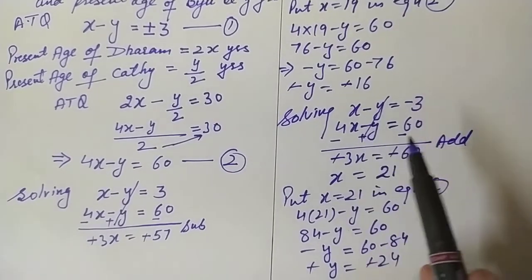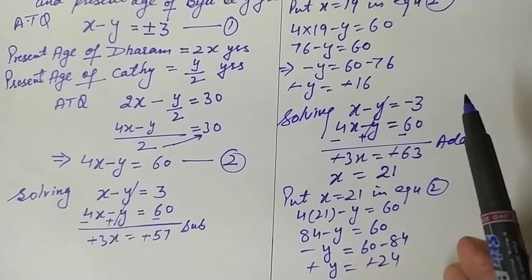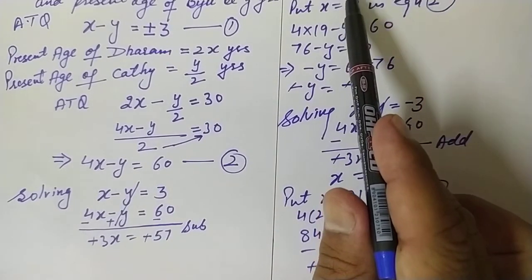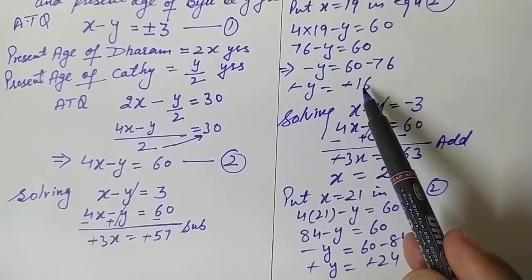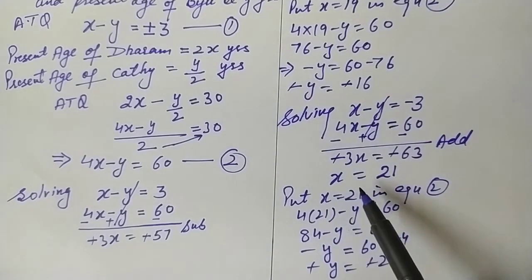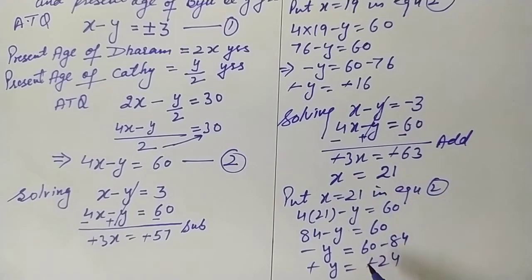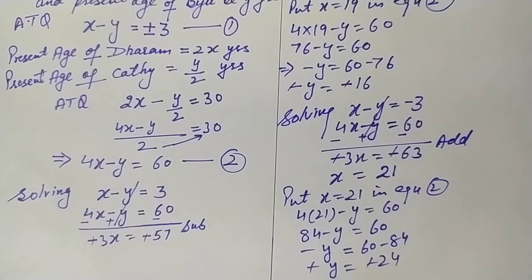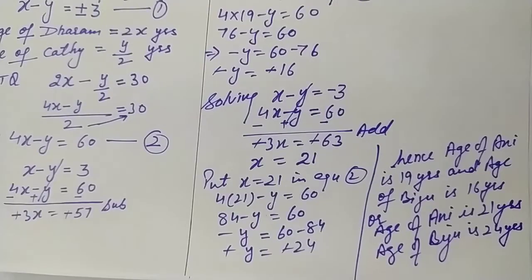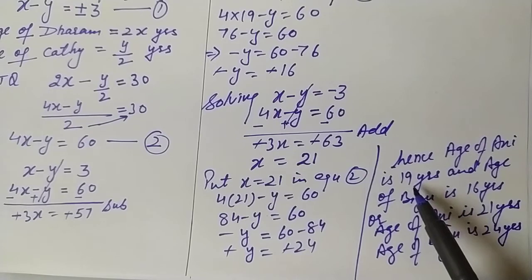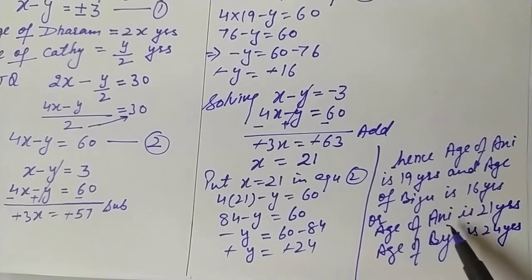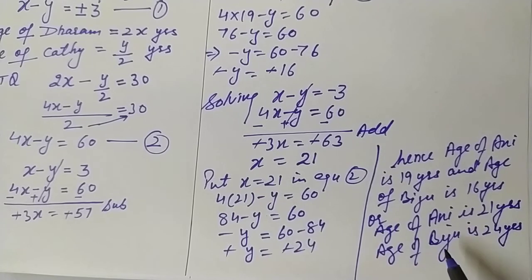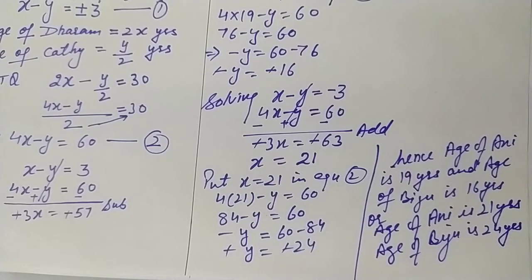Both cases are valid, so there are two answers to this question. Hence, age of Ani is 19 years and age of Biju is 16 years, or age of Ani is 21 years and age of Biju is 24 years. This is how we solve this question.